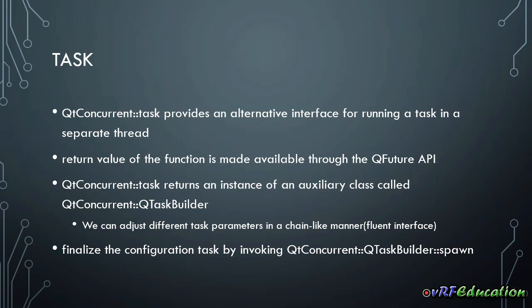The task method is designed for cases where you need to perform extra configuration steps. It returns an instance of an auxiliary class called QTaskBuilder inside the Qt Concurrent framework. Normally you don't need to create an instance of this class manually. QTaskBuilder provides an interface to adjust different task parameters in a chain-like manner. This approach is known as a fluent interface. To finalize the configuration of a task, you must invoke the spawn method of QTaskBuilder. This function is non-blocking, but it's not guaranteed that the task starts immediately. You can use QFuture and QFutureWatcher classes to monitor the status of the task.